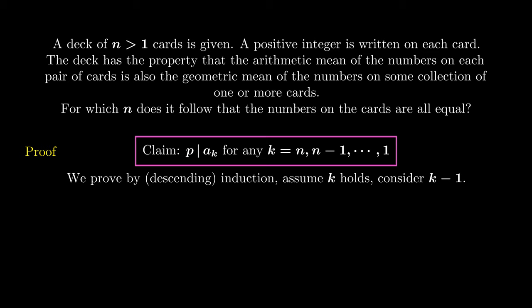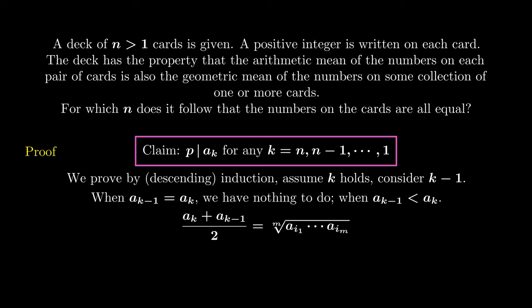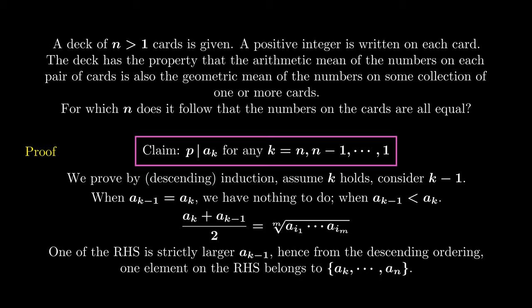By the descending order, we know that ak-1 is not larger than ak. If it is equal, then we are done. If ak-1 is smaller than ak, we know that the arithmetic mean of ak and ak-1 is the geometric mean of some collection of ai.